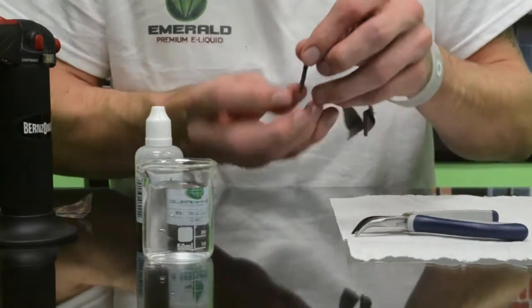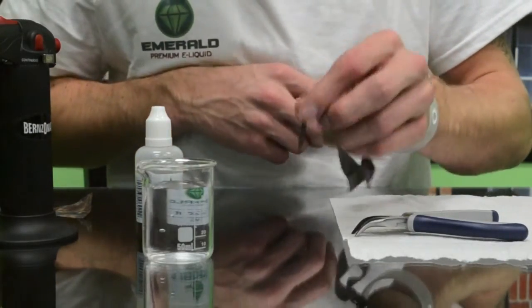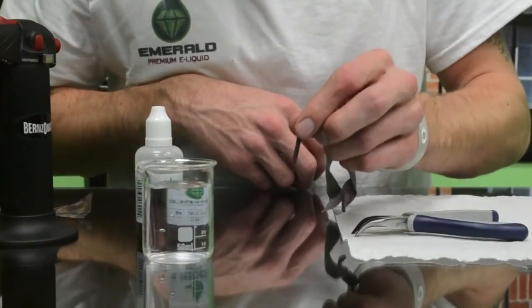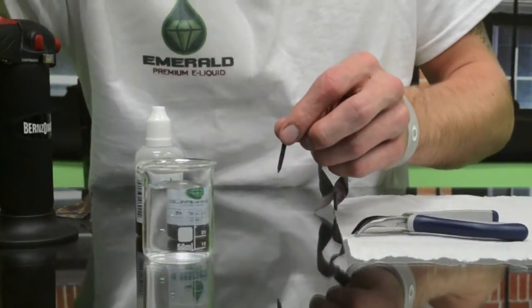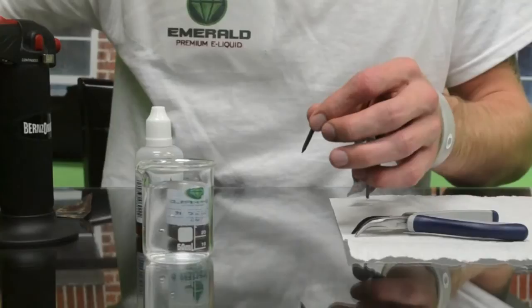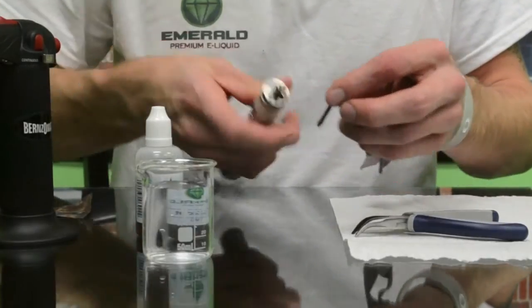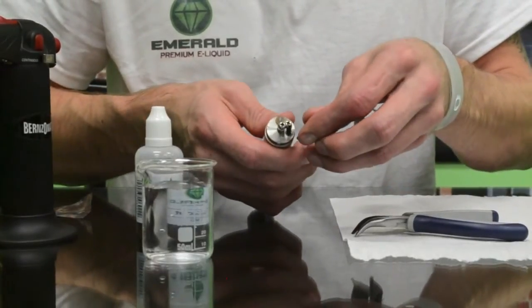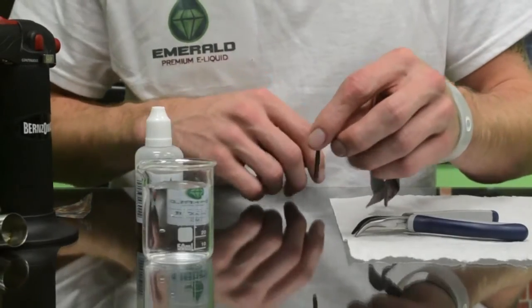Once it's about the width of your air holes that you're going to put in your rebuildable atomizer, you can put it in the wicking hole.